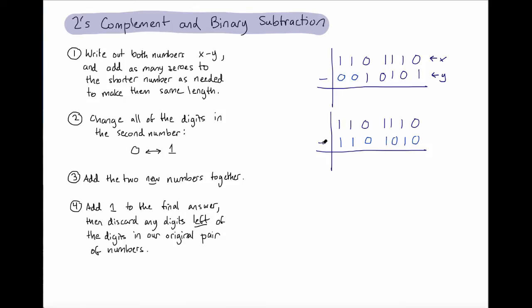...and we're going to add these two new numbers together. So we've got zero, zero, zero, one, one, zero, one, and one. So we're not quite done. Now that we've added our two numbers together, we're going to take our final answer there, and add one. So our final answer is one zero zero, one one zero one, and we actually had a bit over here that was further to the left of our bits. We're not going to carry that down. So this is our final answer to our original subtraction problem.